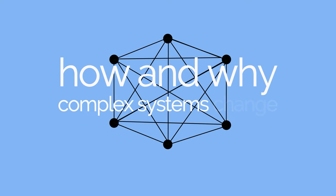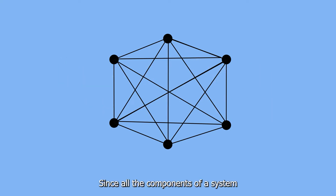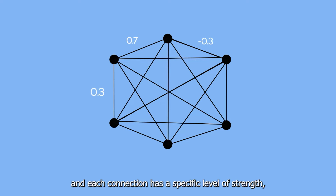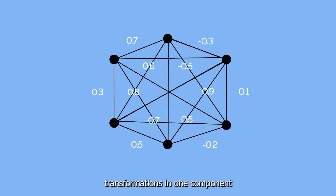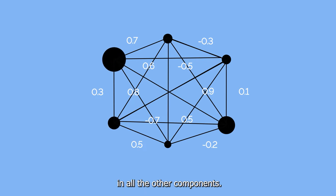Fuzzy cognitive mapping is particularly useful to understand how and why complex systems change. Since all the components of a system are connected and each connection has a specific level of strength, transformations in one component can lead to unpredicted variations in all the other components.